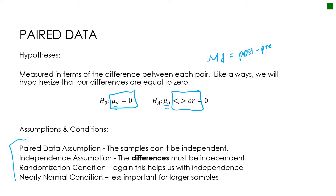Conditions and assumptions: Paired data — the data cannot be independent; they have to be paired to use this test. Independence — the differences must be independent, so Sean's differences versus Maya's differences must be independent. Randomization — each person or item should be randomly selected; this helps with independence. And nearly normal — if you have a large sample it's less important, but otherwise you should check your QQ plots or histograms.